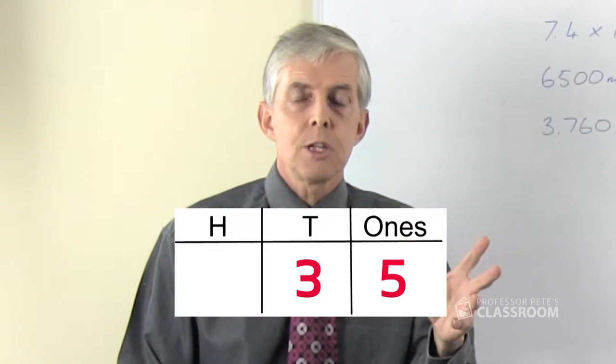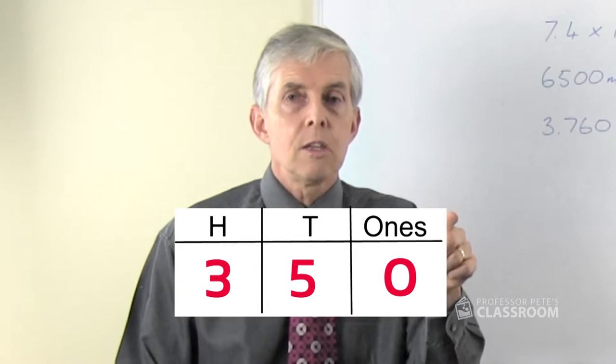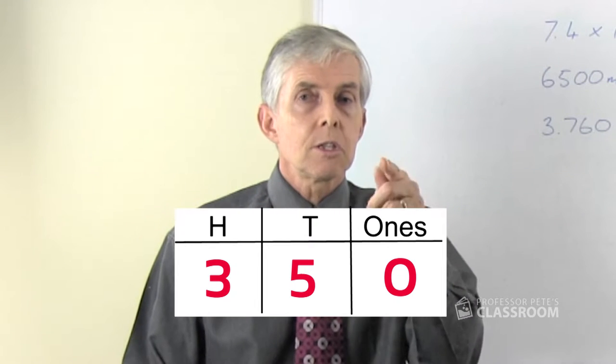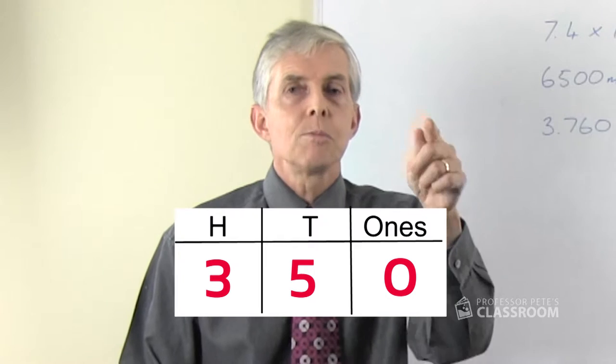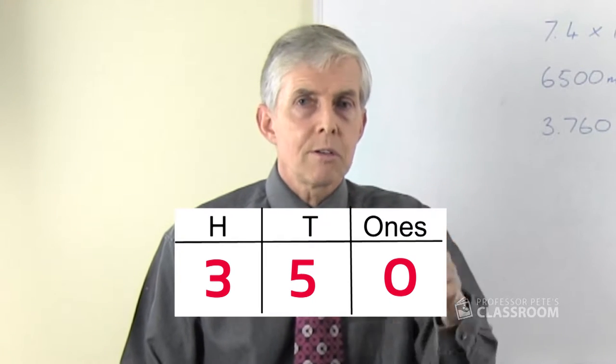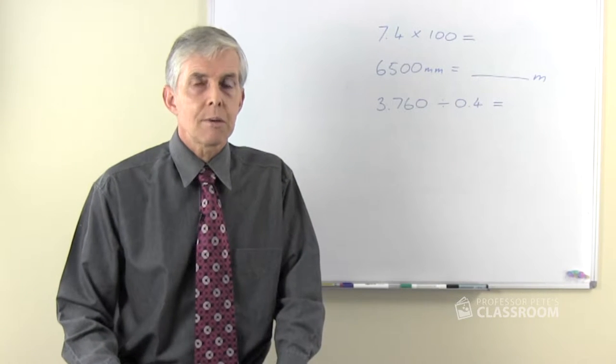If you multiply a number like thirty-five by ten you end up with thirty-five tens. The three tens effectively moves to the three hundreds, the five ones moves into the five tens, we put a zero to hold the ones place and there's our answer. That is accurate, that is actually what's happening.